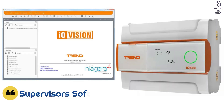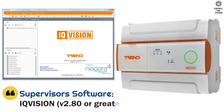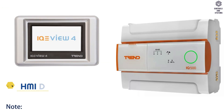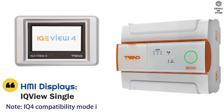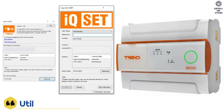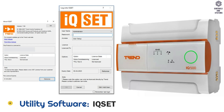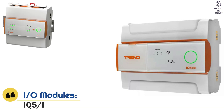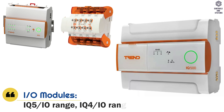Supervisor Software: IQ Vision version 2.80 or greater. HMI Displays: IQ View Single Controller Display for IQ5. Utility Software: IQ Set. IO Modules: IQ5 IO Modules, IQ4 IO Modules.